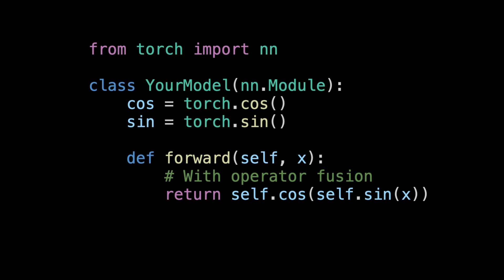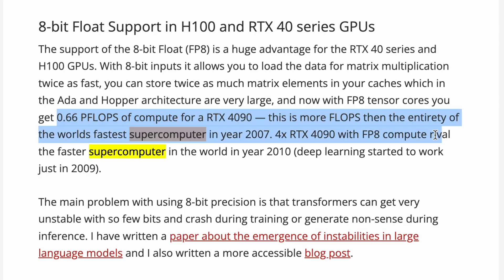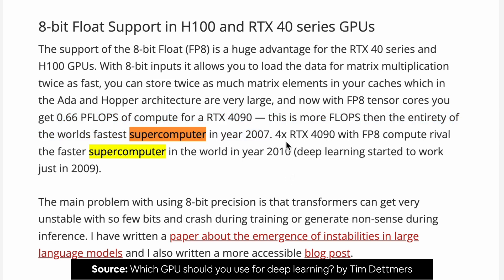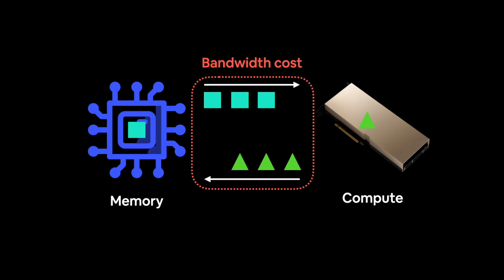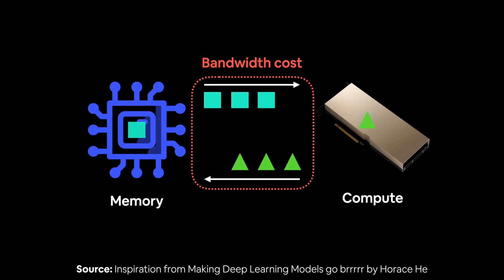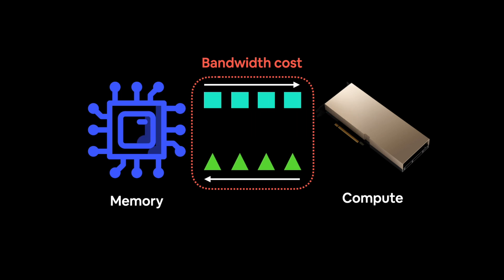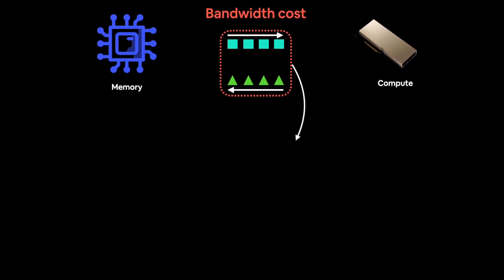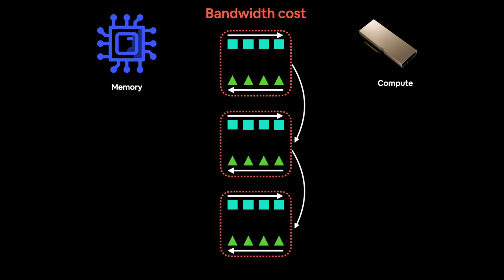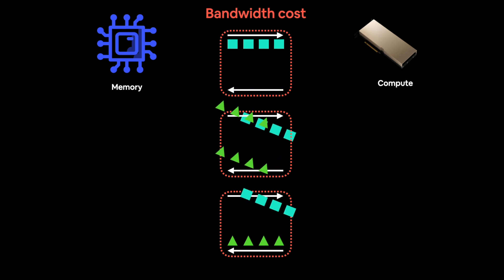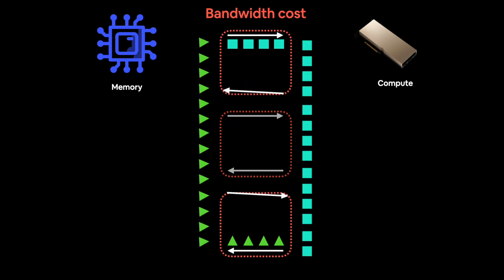Why? Modern GPUs have so much compute power that they are often not compute limited, meaning the main bottleneck to training models is how fast you can get data from your CPU to your GPU. This is known as bandwidth, or memory bandwidth. You want to reduce your bandwidth costs as much as possible and feed your data-hungry GPUs with as much data as possible. So instead of performing an operation on a piece of data and then saving the result to memory — computation, memory, computation, memory — you chain together as many operations as possible via fusion.